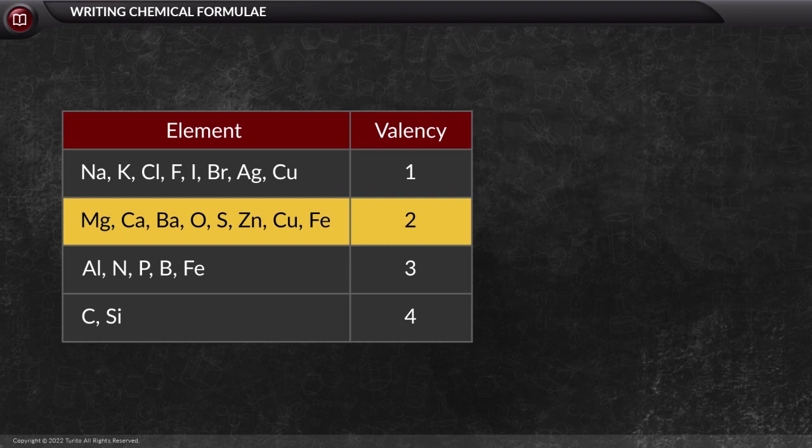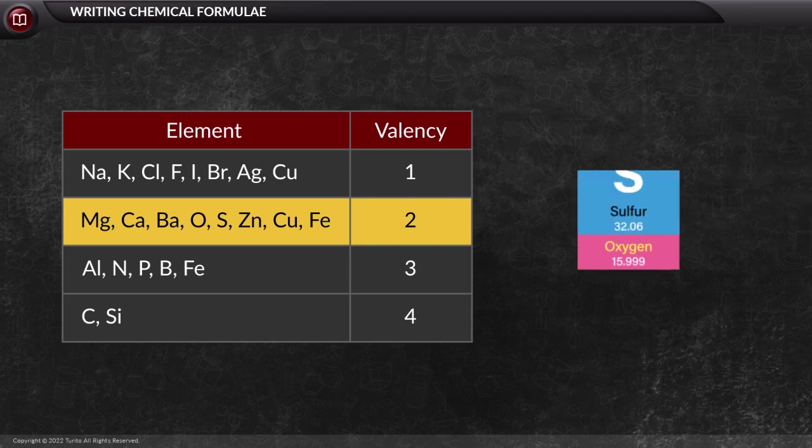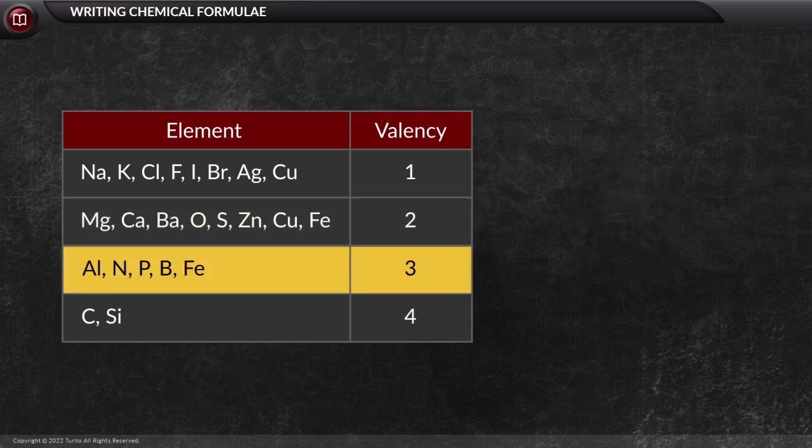Next are the elements which show valency 2, and they are magnesium, calcium, barium, oxygen, sulfur, zinc, copper and iron.